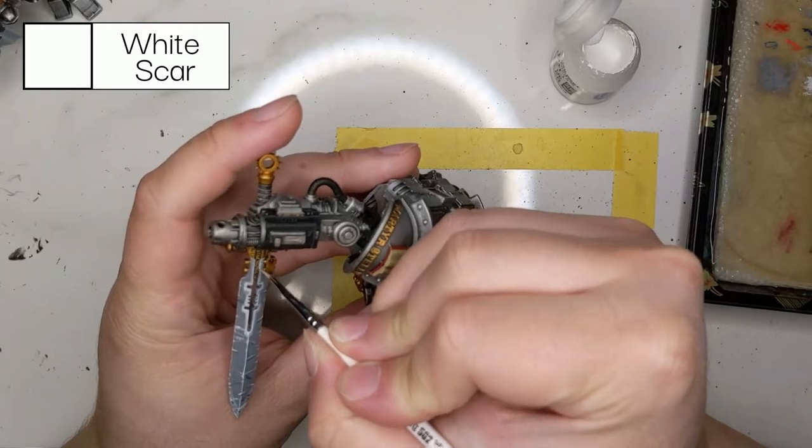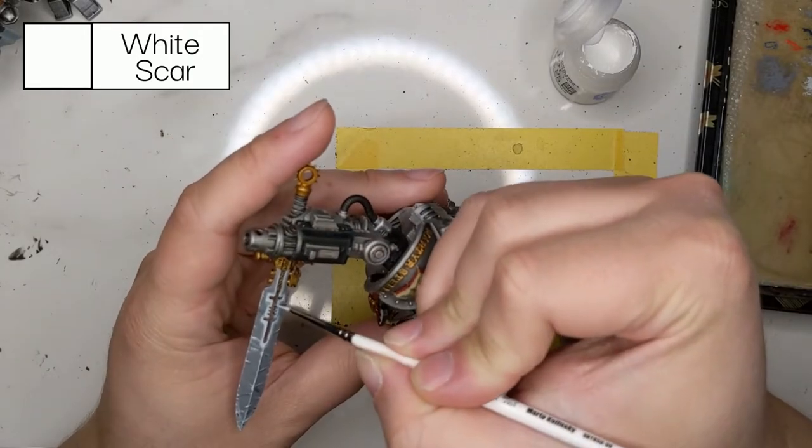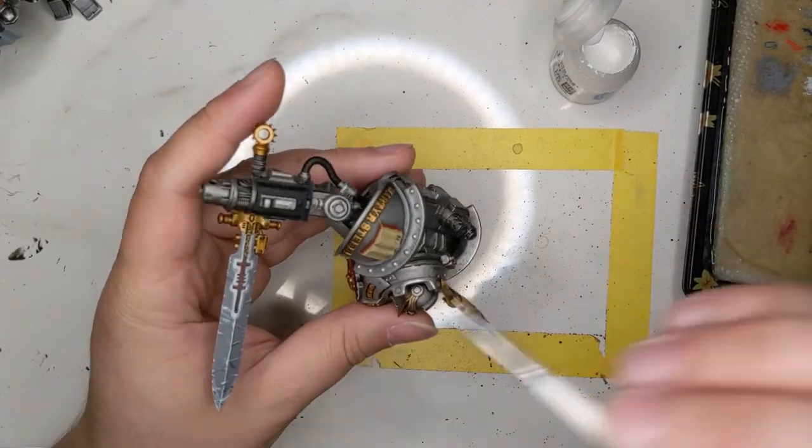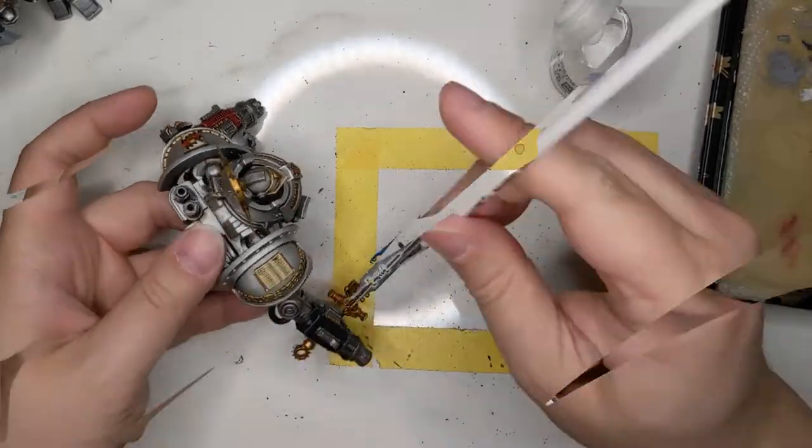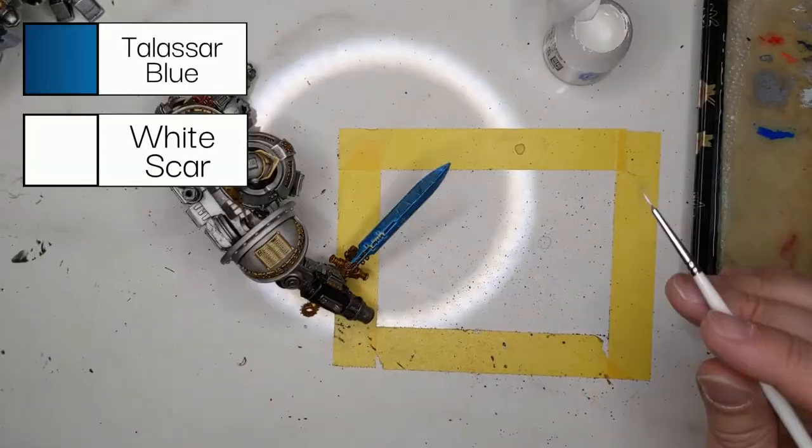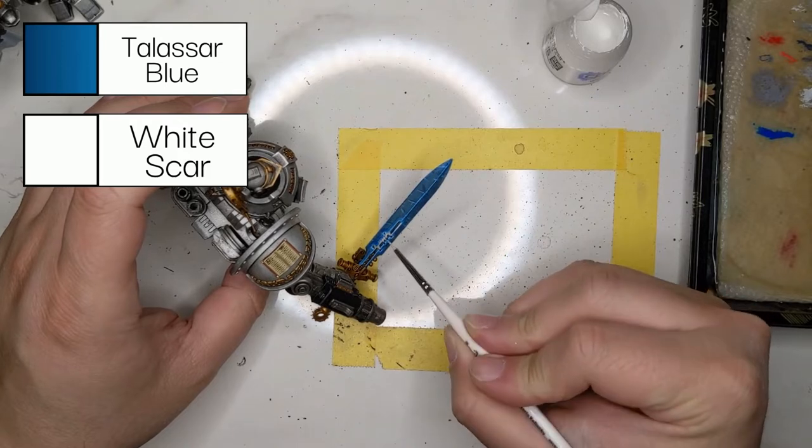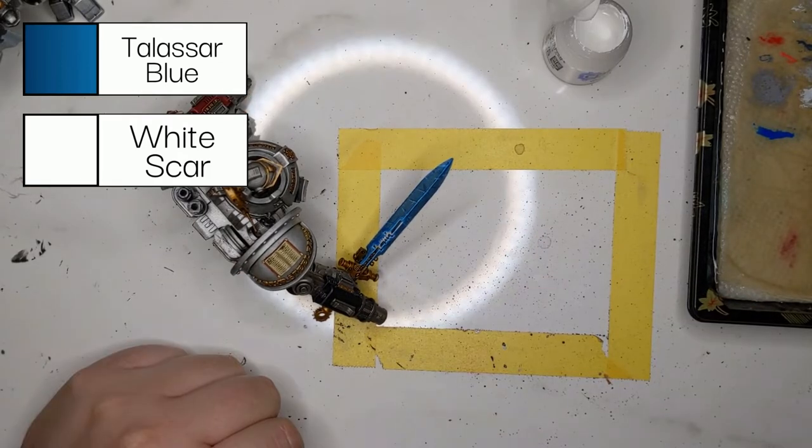We're going to bring it up one last time with White Scar before we add a flat layer of Talassar Blue, and then come back in and go over the main highlights with White Scar again.